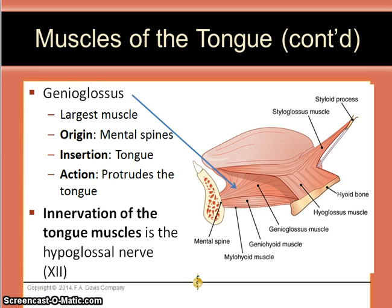The genioglossus muscle is the largest of the tongue muscles. It originates in the mental spines and inserts in the tongue. Its action is to protrude the tongue. An extrinsic muscle is a muscle that has its origin outside the tongue; all of these muscles are extrinsic muscles.